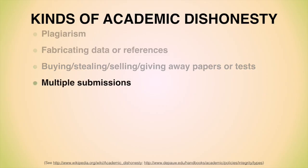Submitting a paper — either the whole paper or a substantial portion of it — to more than one professor or for more than one class is considered dishonest too. That means you're only learning half as much as you were supposed to. If you're doing a similar topic in two classes, ask both professors how you might make the most of the paper, clearly letting them know what portions you might reuse. Or, you might ask if you can turn in one much longer paper that's sufficient for two classes worth of work.